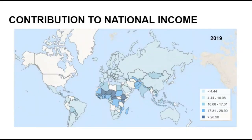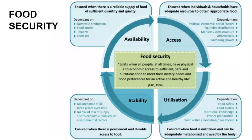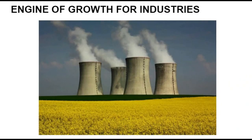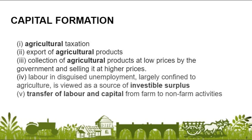On the whole, agriculture plays a very important role in economic development. It contributes to national income and provides livelihood to a majority of the population, particularly in developing nations with large rural populations. It is a source of food security — ensuring food is available, accessible, utilized, and stable. It acts as an engine of growth for industries, creates markets for industrial goods, helps in foreign trade, increases foreign exchange earnings, and contributes to capital formation.